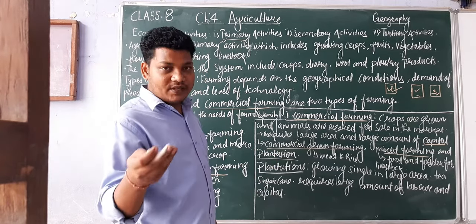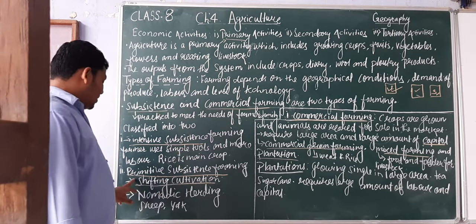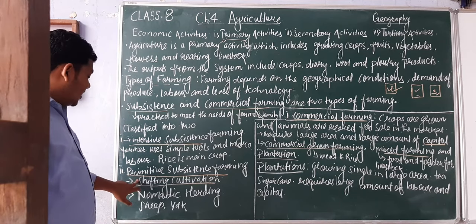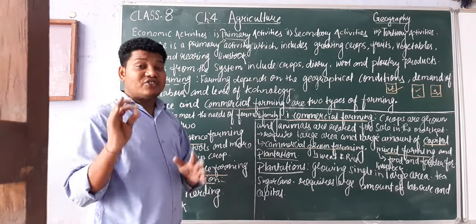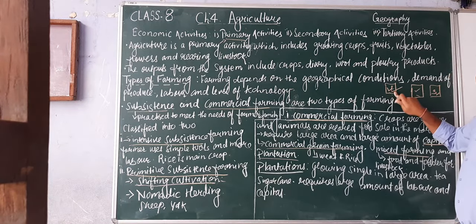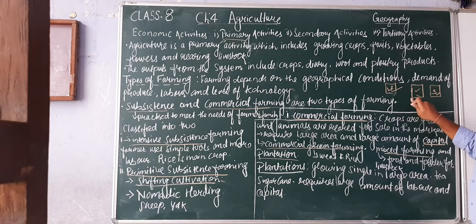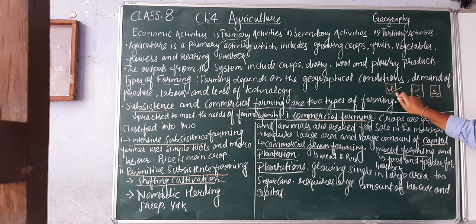The other type under primitive subsistence farming includes shifting cultivation and nomadic herding. Shifting cultivation is also known as the slash and burn method. A patch of land is cleared and farmed for one or two growing seasons, then left and another patch is burned and used. Once the soil loses its fertility, farmers shift to another patch of land. Meanwhile, the earlier patch recharges its natural fertility before being used again.